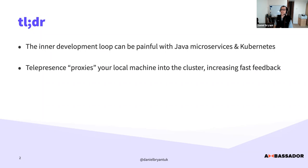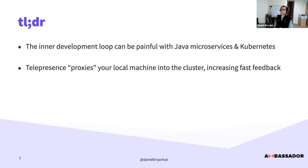Telepresence is a tool that proxies your local machine into the cluster so you get that fast feedback loop. Throughout my career I remember doing a lot of Java monolith work with hot reload using tools like JRebel. Telepresence points in that direction — getting that fast feedback for code, testing, and seeing the results.